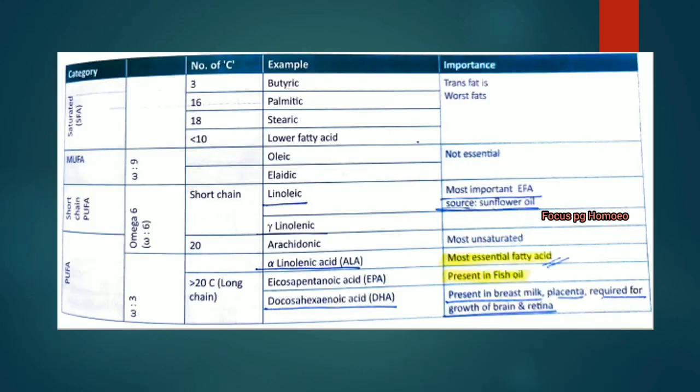Regarding types of fatty acids: saturated fatty acids include butyric acid, palmitic acid, stearic acid and other lower fatty acids. These are known as bad fats or trans fats. Monounsaturated fatty acids are not essential — these include oleic and elaidic acid.